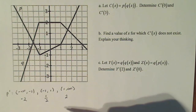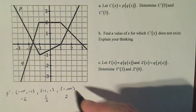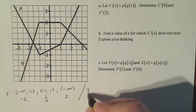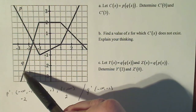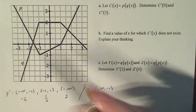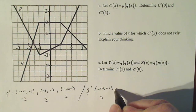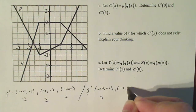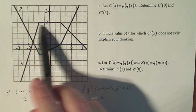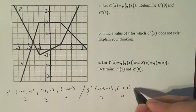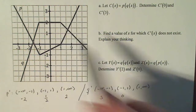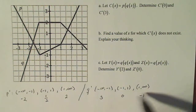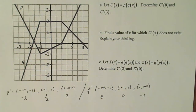I'll do the same thing for q. For q prime from negative infinity to minus one, it looks like I go up three and over one, so that's a slope of three — the derivative of q on that interval is three. From minus one to one, that has a slope of zero, so the derivative along that interval is zero. From one to infinity, this has a slope of minus one. So q prime over the interval one to infinity is minus one. We'll refer to that chart as I do the problems.